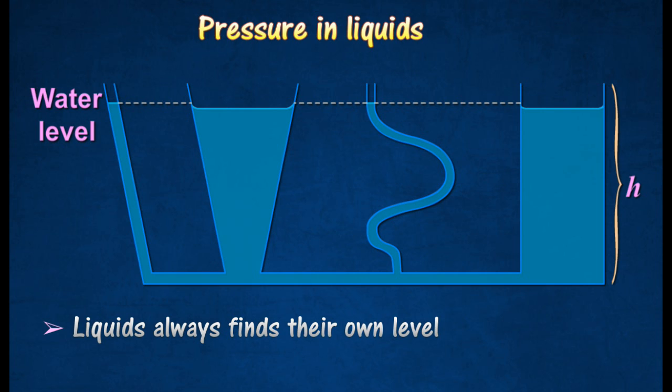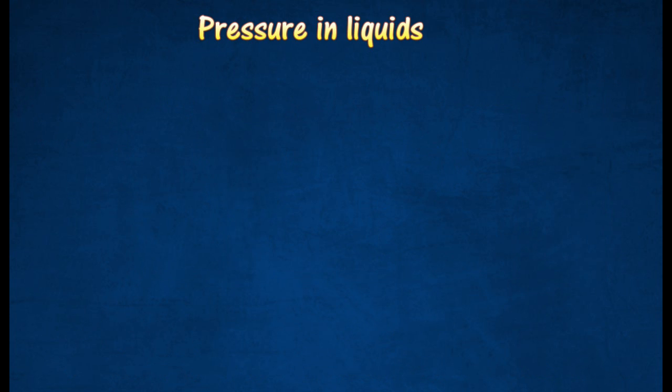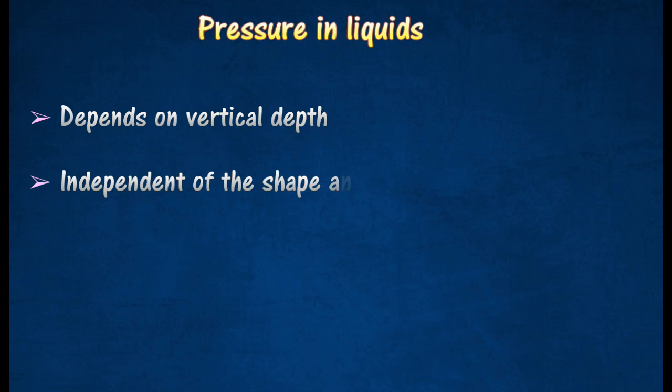At the same level or depth, the liquid pressure must be the same, otherwise liquid will flow to equalize any pressure differences. This confirms the fact that the pressure in the liquid depends on vertical depth, and is independent of the shape and cross-sectional area of the containing vessel.